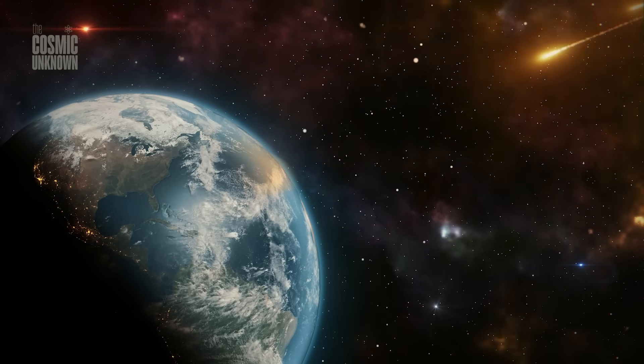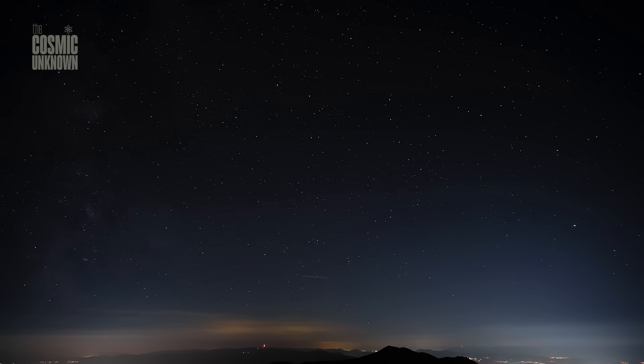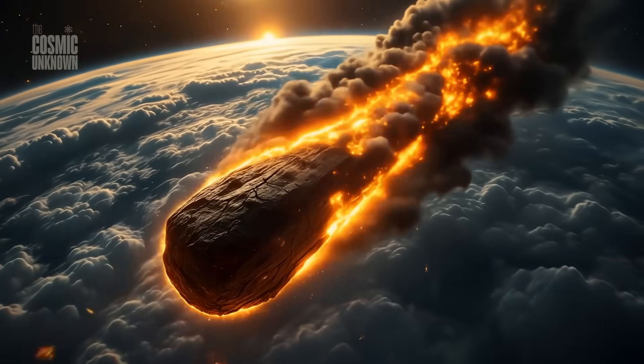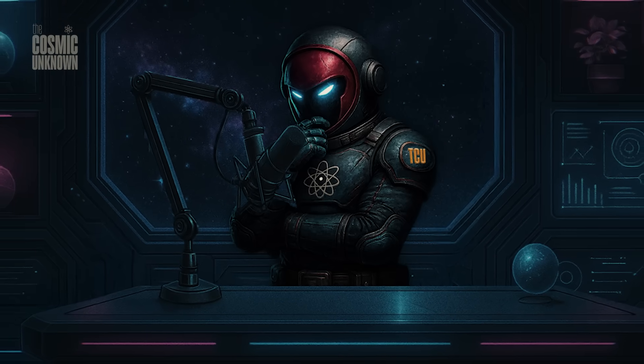Then came the first impact—a coronal mass ejection on September 25th. A solar storm hurled plasma toward it. And yet, no disruption, no flicker, no shift in trajectory. It just kept going, as if the sun itself couldn't touch it.